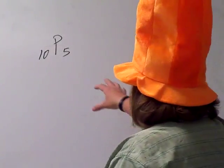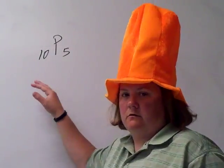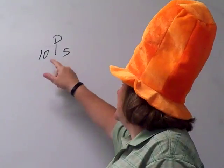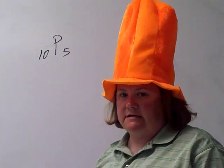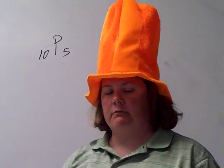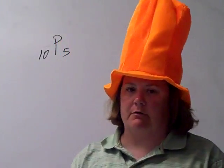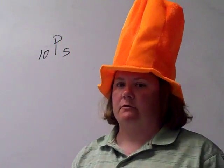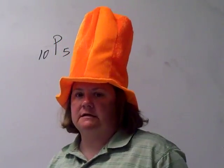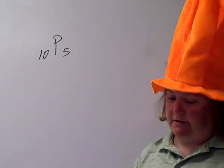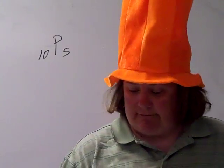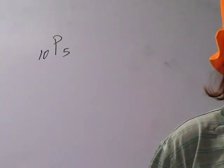I had some of these problems a little while ago. This says 10P5. Remember that P stands for something in probability — not actually probability, but it stands for a type of probability that has to do with arranging things. So 10P5 — figure out how many different arrangements we have there.